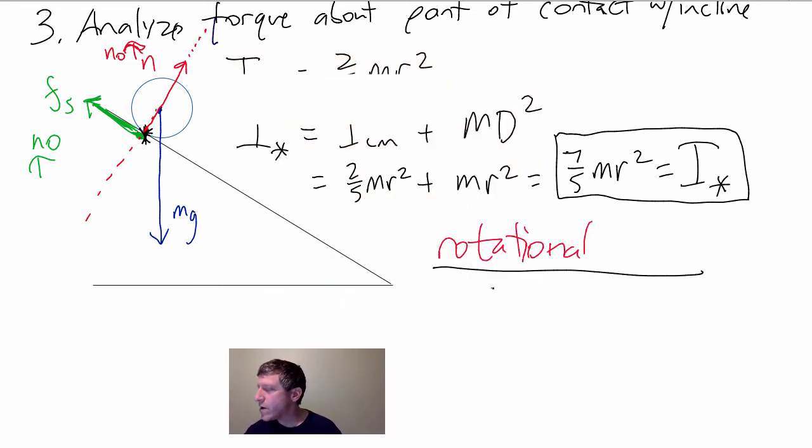All we got to do is the net torque about our star axis equals I about our star axis times alpha about that axis.